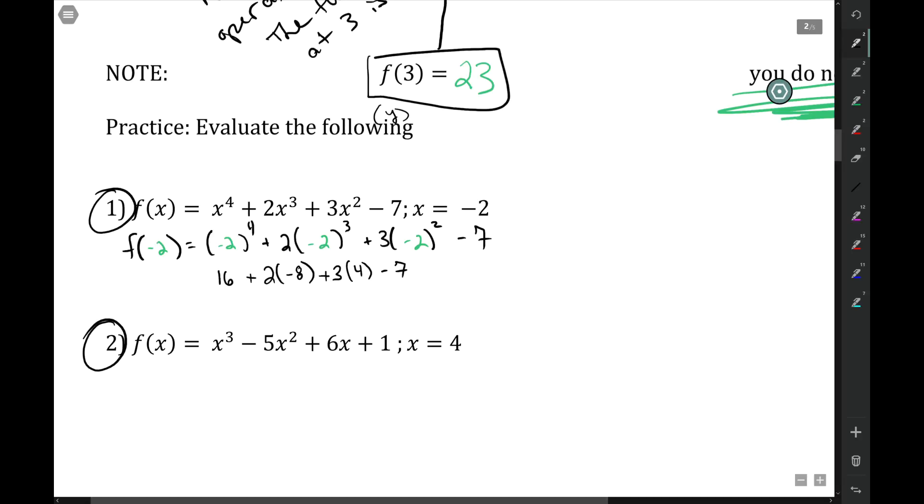16 plus two times minus eight, those are going to cancel. Three minus four is the same as 12 minus seven. So if you use your calculator, that's fine, of course, but you should get five as your answer.